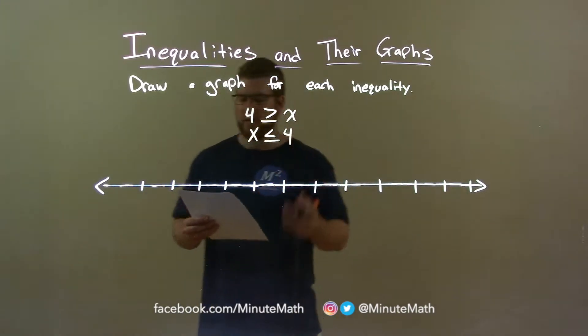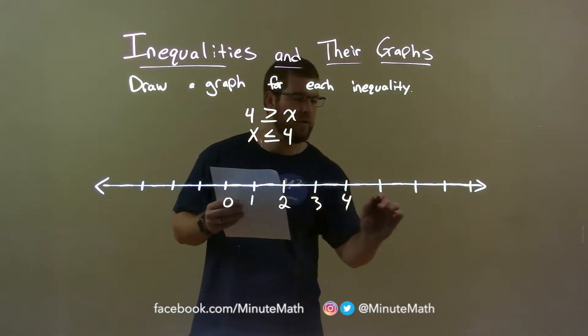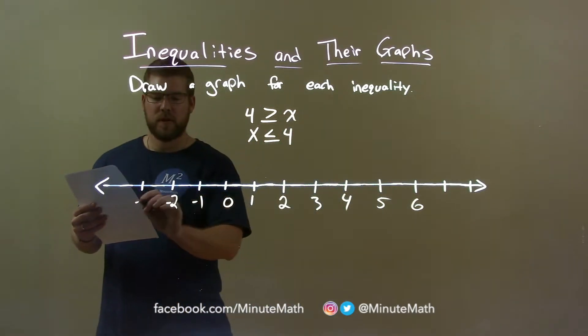Now let's make a little number line here. Make sure we encompass 4 so we have 0, 1, 2, 3, 4, 5, 6, and negative 1, negative 2, negative 3.